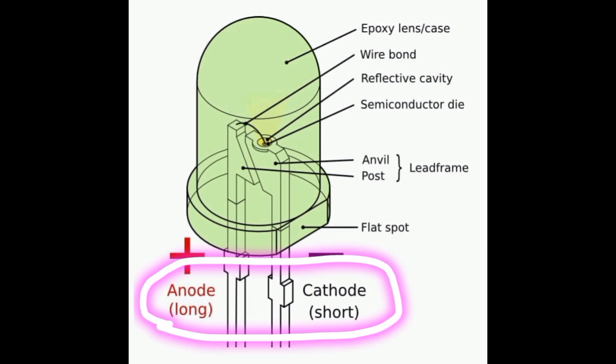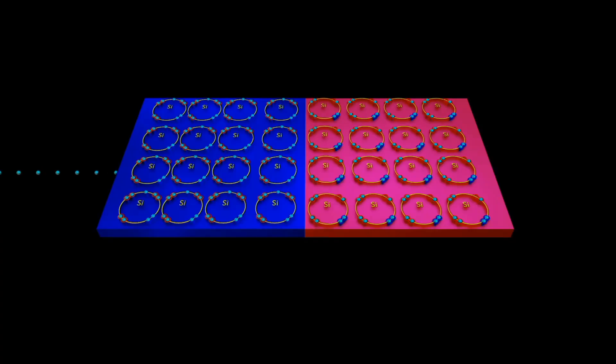Anode and cathode are electrical terminals of the LED. The anode is the positive terminal connected to P-type semiconductor, while the cathode is the negative terminal connected to N-type. Now when we apply voltage across the anode and cathode, current flows through the LED, resulting in the emission of light.